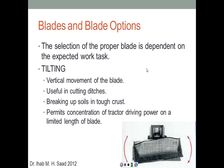Now we'll learn about the different types of blade motion. The first is tilting, which is a vertical movement of the blade in the vertical plane. Tilting is useful for cutting ditches, breaking up soils in tough crust, and it concentrates the tractor's driving power on a limited length of the blade. A small part of the blade contacts the soil, so the heavy power of the dozer pushes on a tiny portion, creating very high force at that small contact point.